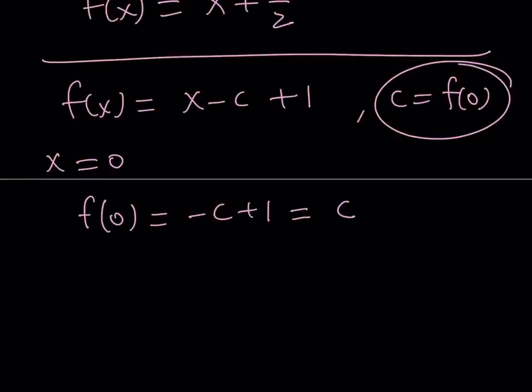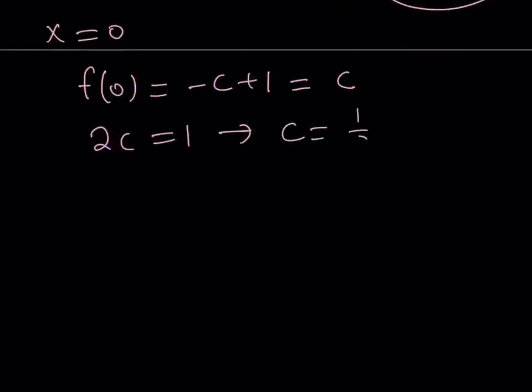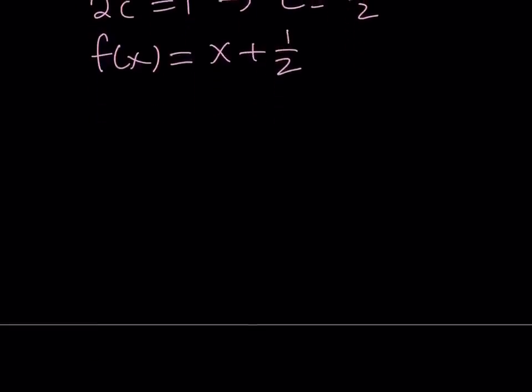That gives us the following equation. And if we add c to both sides, we get 2c equals 1, 2c or not 2c. From here, we get c equals 1 half. Therefore, f of x one more time becomes x plus 1 half. And this brings us to the end of this video.